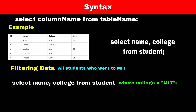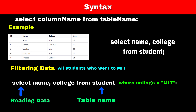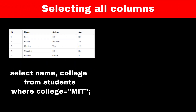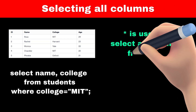The SELECT statement in this query represents that we want to read the data, and it will select the name and college columns from the student table where the college of a student is MIT. You must have noticed that while reading the data we have to give names of columns, and a table can have hundreds of columns. So if you want data of all the columns from your table, you can use star instead of column names.